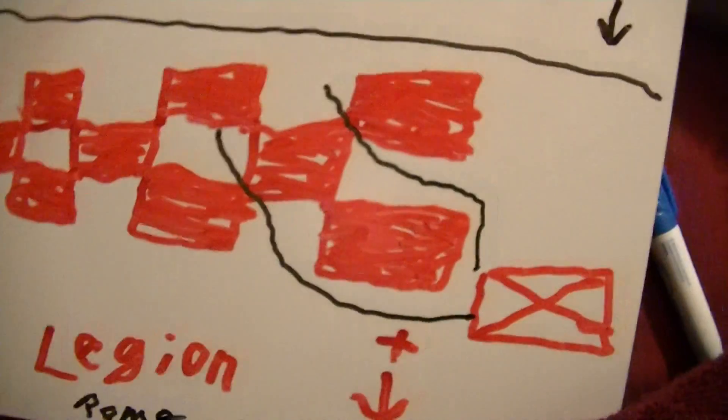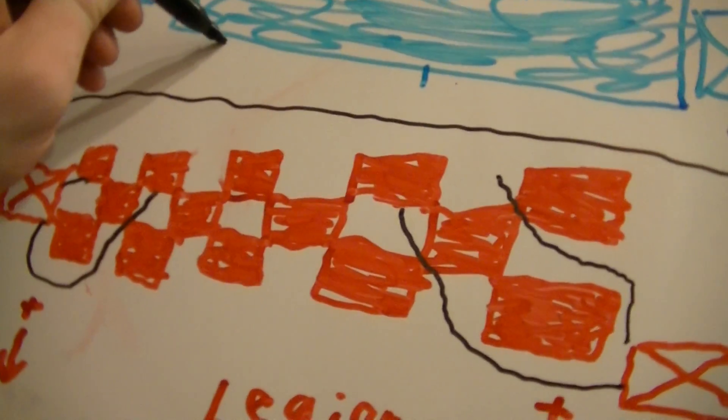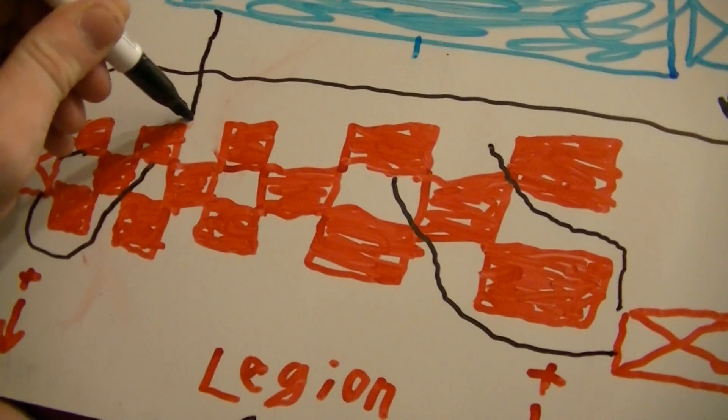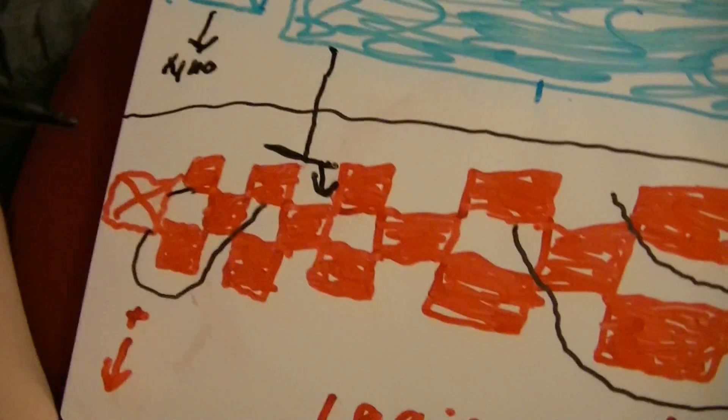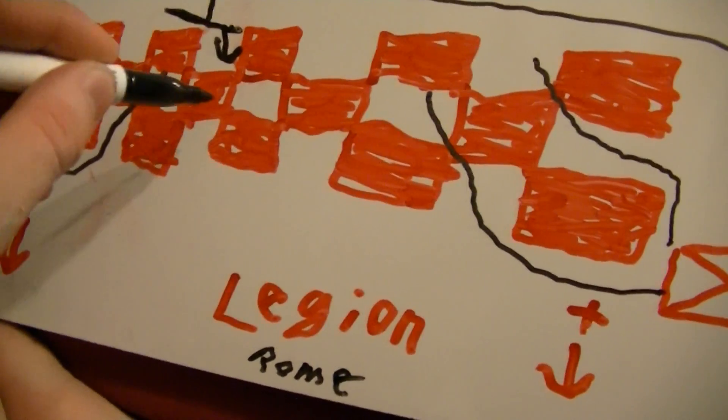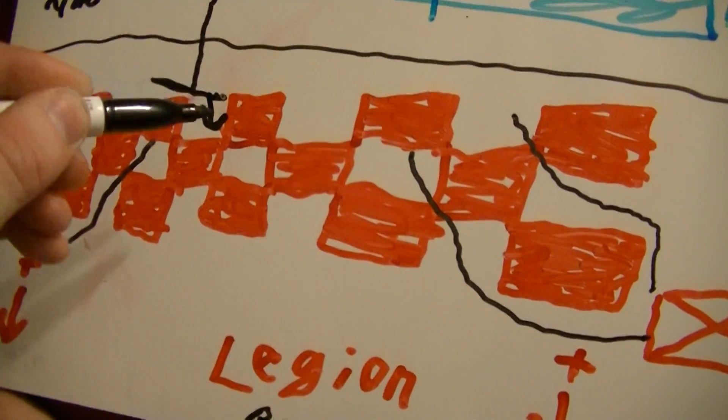So, when this whole phalanx comes here, if one of you could explain to me what would happen if, let's say, this phalanx met its wall here, but some guys decided to go into this interval. Is this guy here in charge of running up and filling that gap?